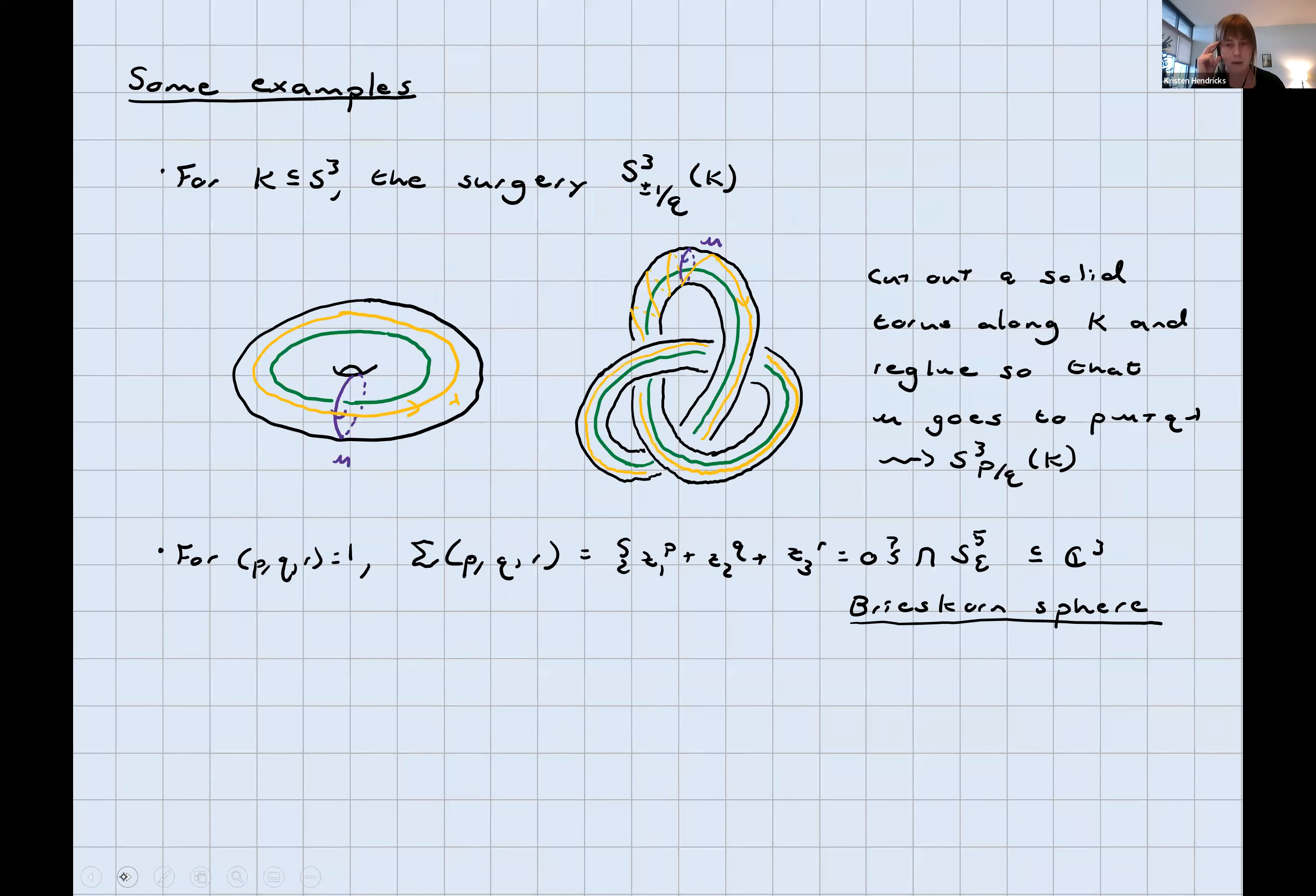Let me give you some examples of manifolds that are homology spheres. One way to get examples is if I've got a knot in S3. I know how to do surgery on knots. I've got a green unknot and a green trefoil. To get a P over Q surgery, I cut out a solid torus along K and re-glue so that the meridian goes homologically to P copies of meridian and Q copies of the longitude. Using meridian torus, the first homology is Z mod PZ. So if I do plus or minus one over Q surgery, I'll get an integer homology sphere.